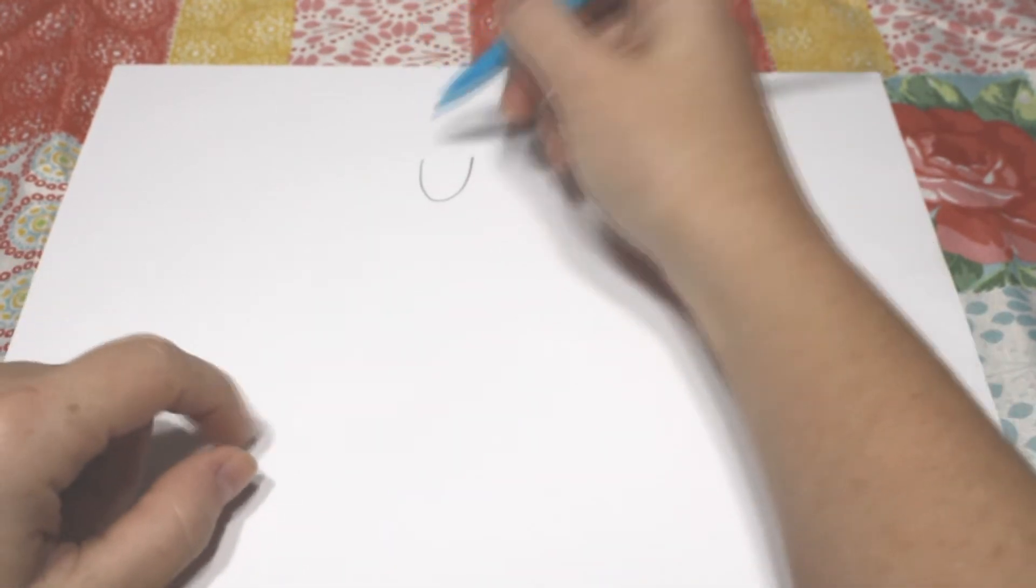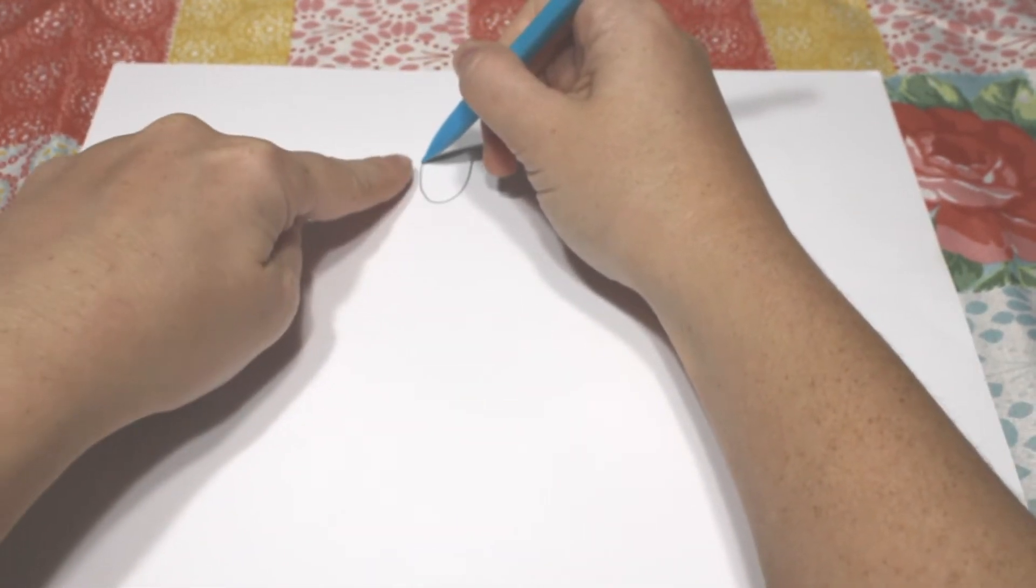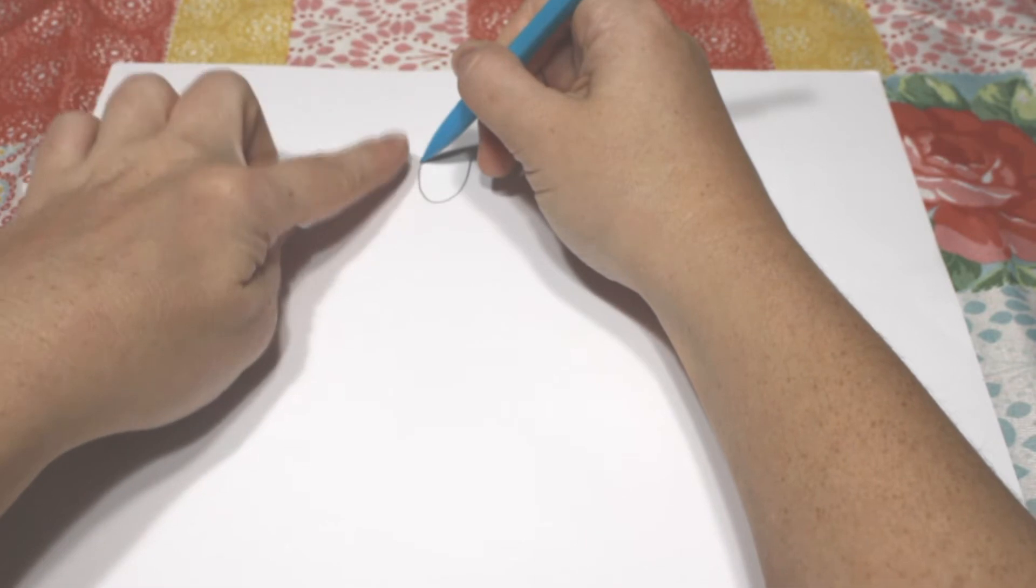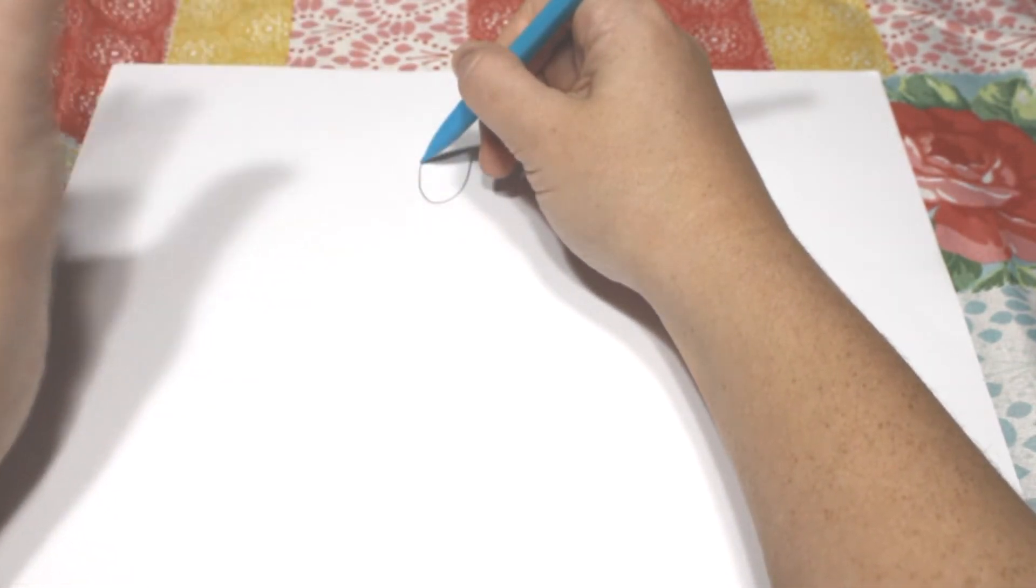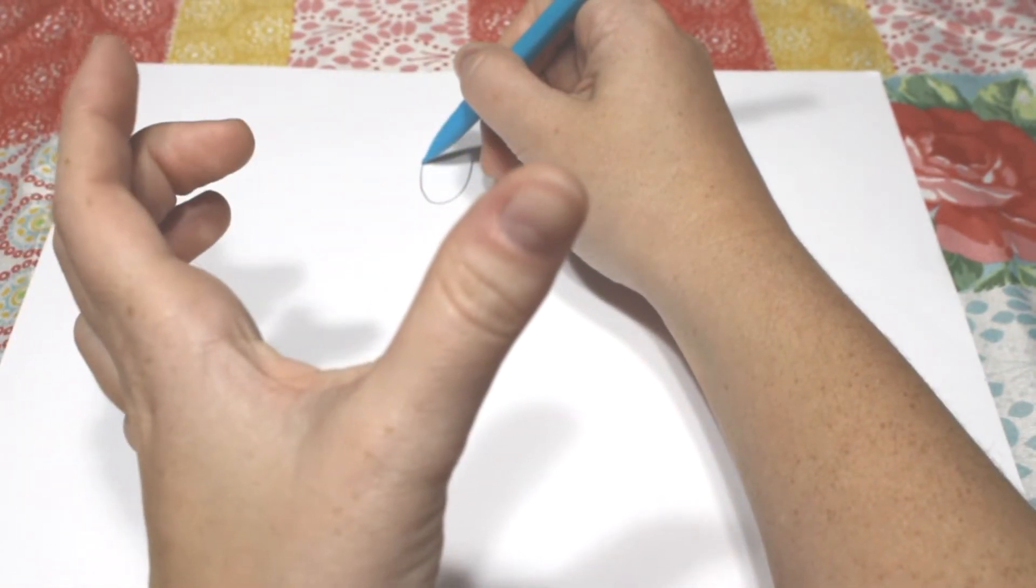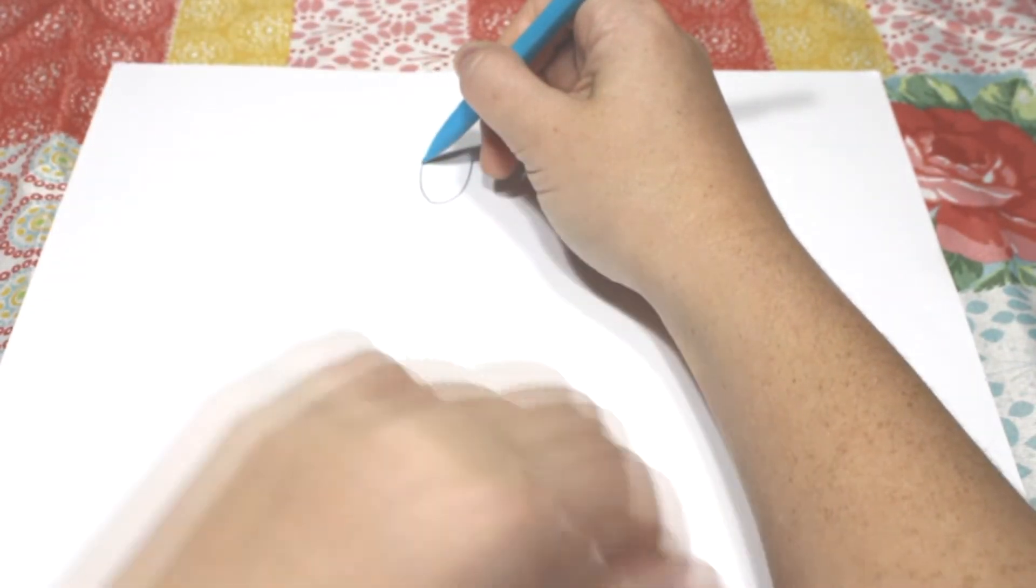So after you have that U, then we're going to start where that U is and we're gonna make a U, but this U is gonna be wider. So this one was kind of skinny like this. This one's gonna be more like this. So not skinny, but wide.